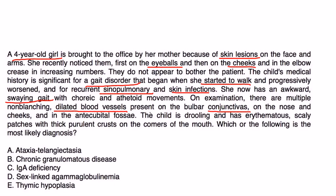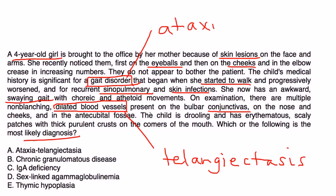The child is drooling and has erythematous scaly patches with thick purulent crusts on the corners of the mouth. Which of the following is most likely diagnosis? Well, they put everything together. All these skin lesions, these dilated blood vessels, that's telangiectasia. And then there's a whole bunch of stuff about her gait disorder and that's basically ataxia. And then they're talking about recurrent sinopulmonary infections, which is definitely part of that disorder. So it's all spelled out for you. Choice A.